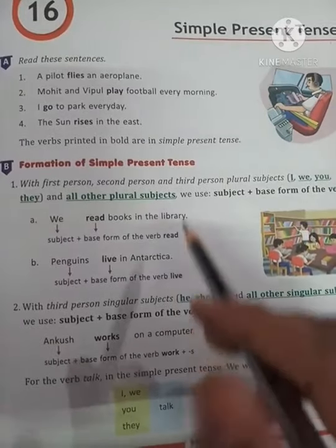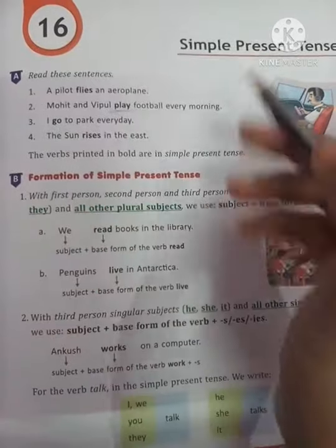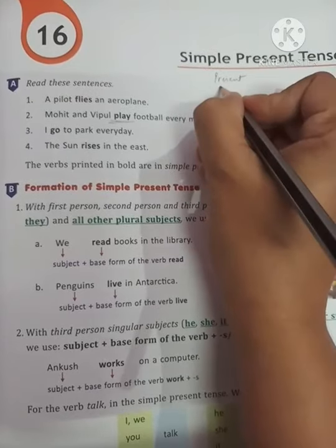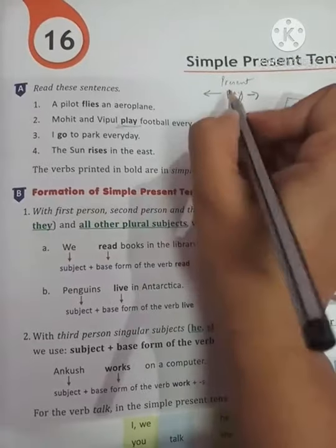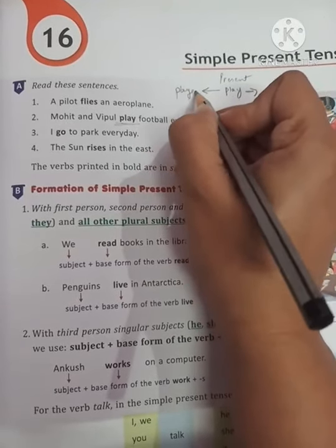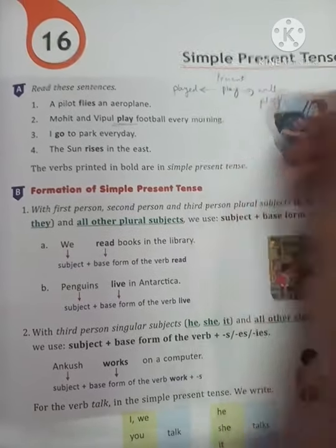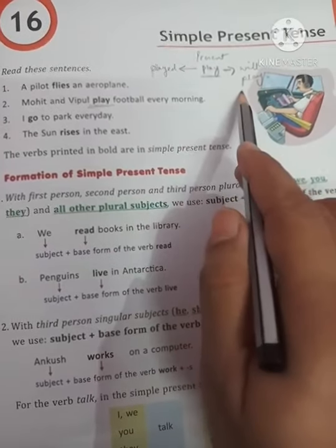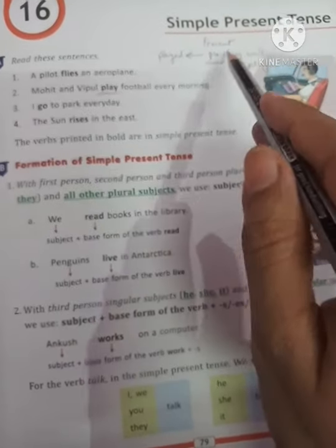In Simple Present Tense, the base form of the verb is used, sometimes with 's' or 'es' added. The base form is the present form of the verb — it is the form from which we make the past form and the future form. For example, 'play' is the base form; its past form is 'played' and future form is 'will play'. So in Simple Present Tense, the base form — the original form of the verb — is used.